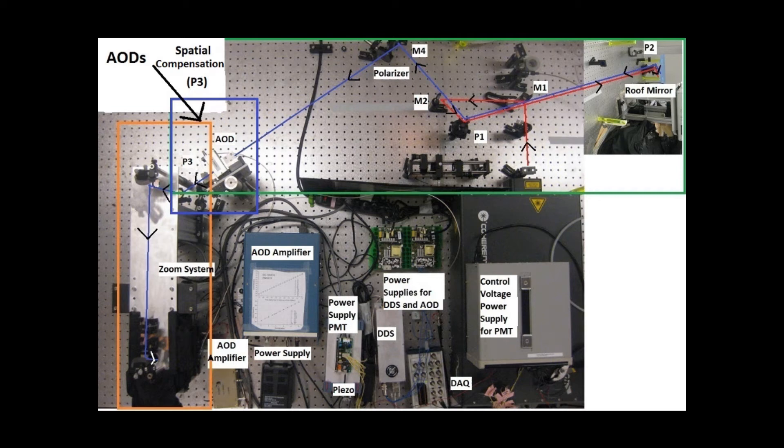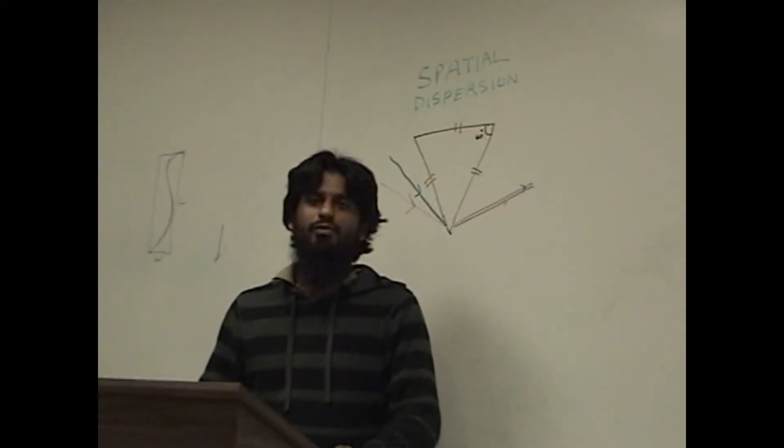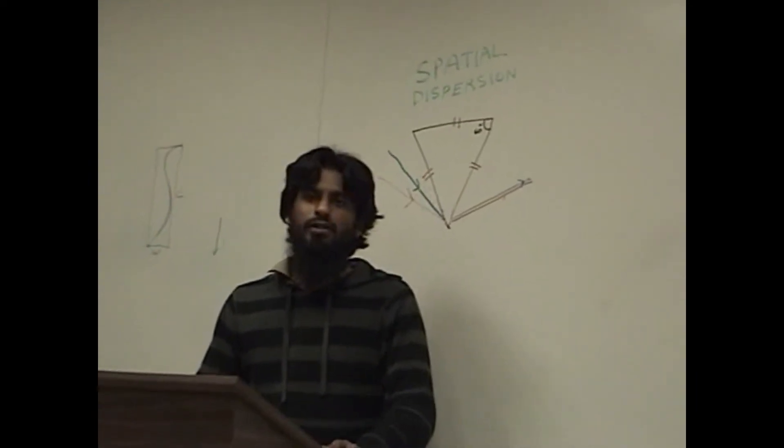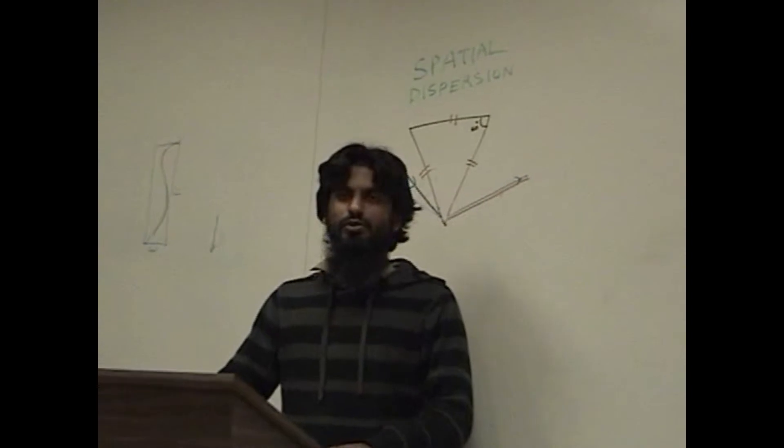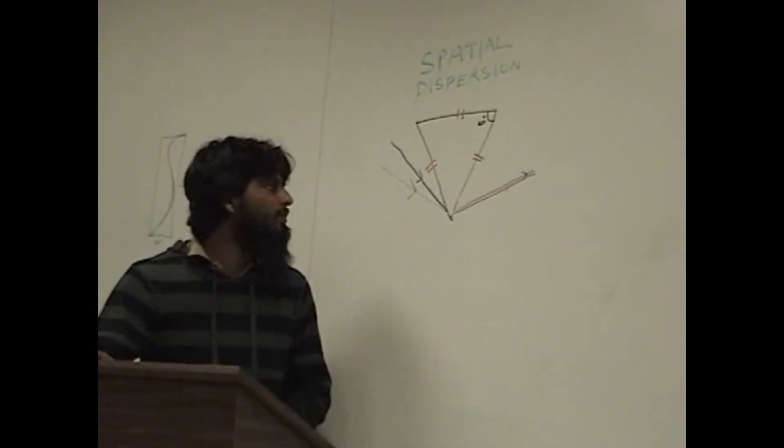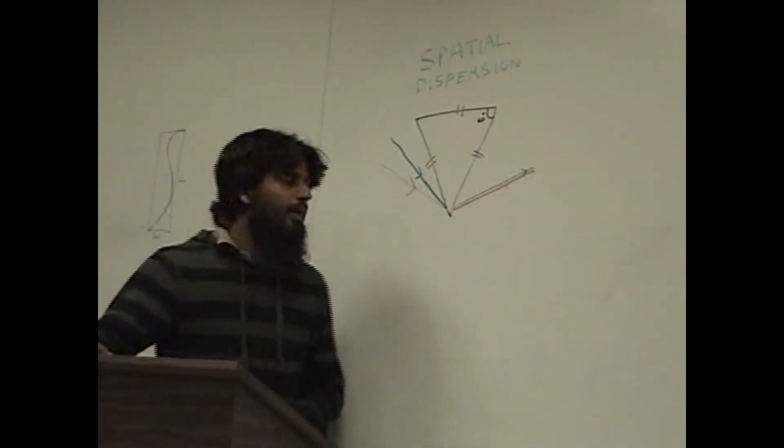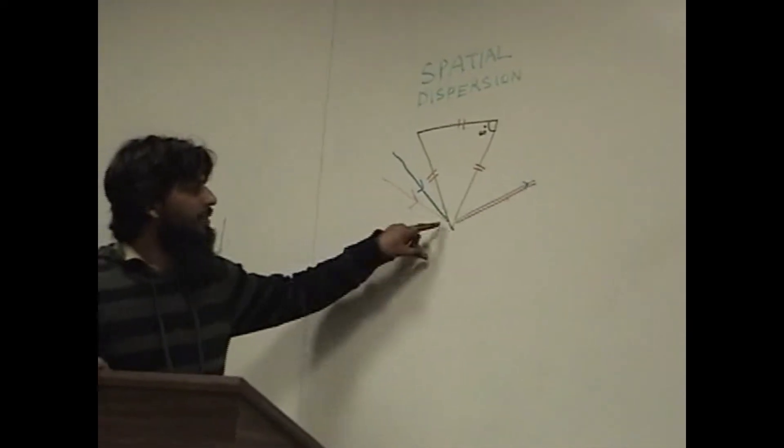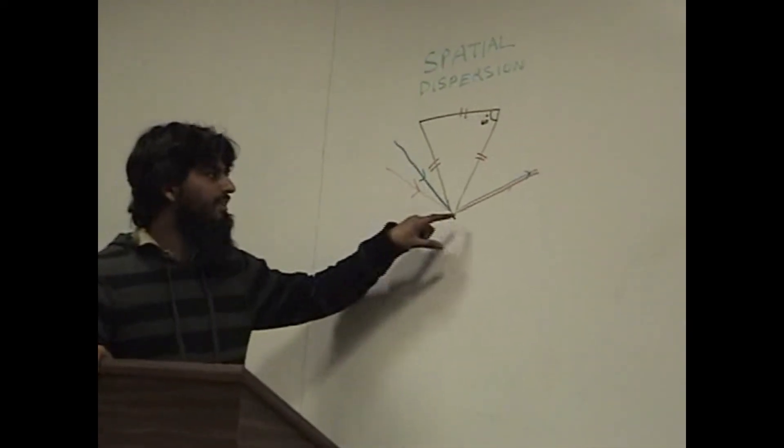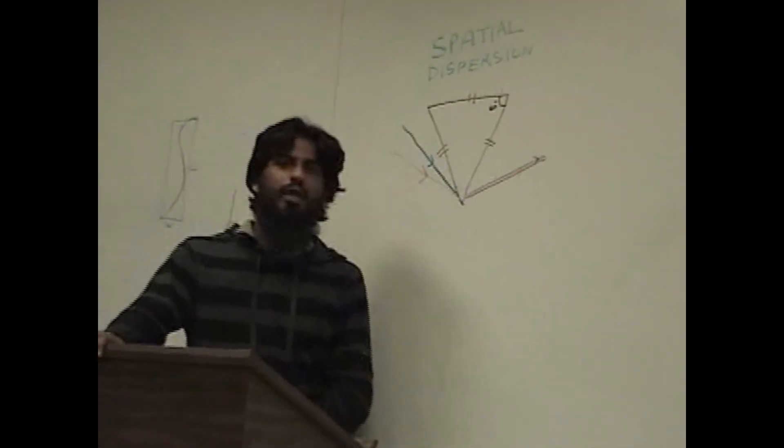The prism P3 located right after the AOD is used to compensate for the spatial dispersion. As we know that AODs introduce spatial dispersion we can compensate for it with one single prism. And we are using SF11 equilateral prism. So as an example, red and blue light enters the prism at a different angle and when they exit the prism they are parallel to each other.